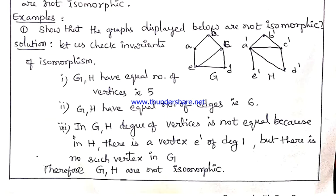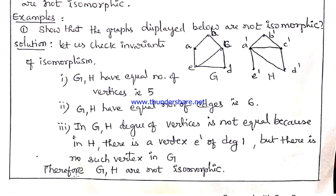Now let us check the third invariant. In the first graph G, we have two vertices of degree 3 — E and C — and the remaining vertices each have degree 2. Whereas in graph H, even though there are two vertices A' and C' of degree 3, the remaining vertices are not all degree 2. Only B' and D' have degree 2, while E' has degree 1. So in graph H there is one vertex with degree 1, but there is no such degree-1 vertex in graph G. The degree sequences do not match — the third invariant failed — and hence the two given graphs are not isomorphic.